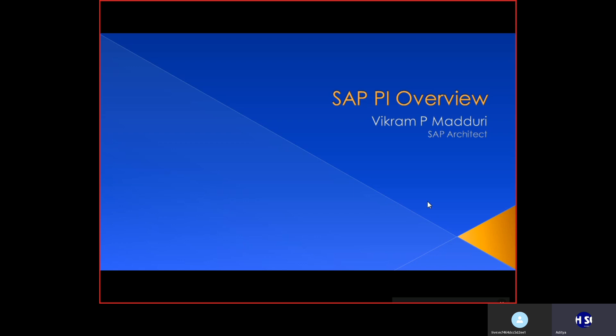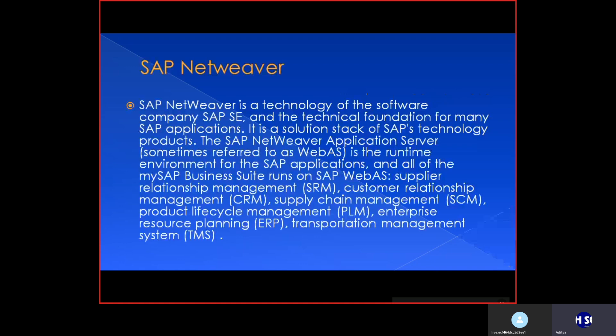The issue came when some companies and clients were not comfortable buying interfaces from outside systems. The general SAP practice was to tell clients to purchase interfaces from other certified companies. Instead, SAP wanted to have their own technology for interfaces without any third-party tools. So SAP introduced a concept called process integration.